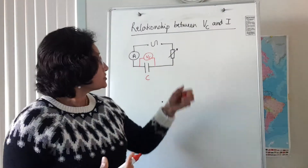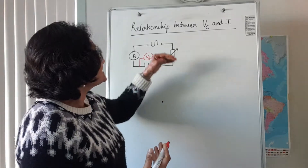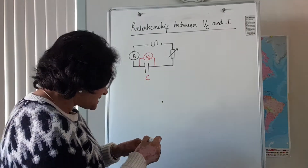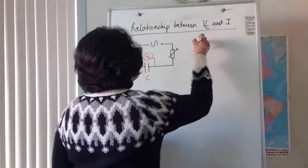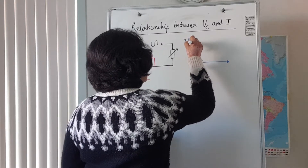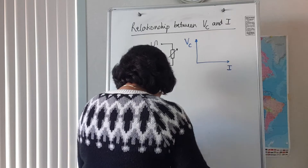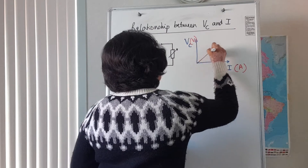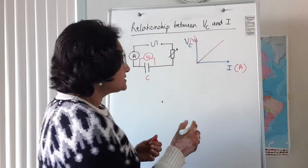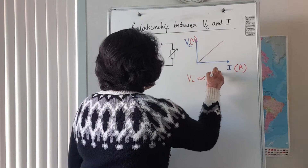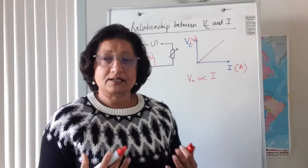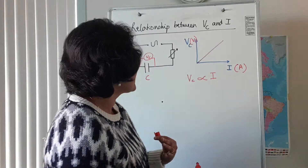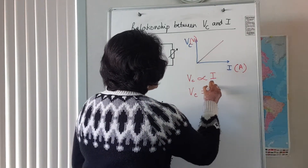For different currents — by changing the sliding contact of the rheostat — you can get different voltages across the capacitor plates. If you plot them on a graph of voltage across the capacitor plates against circuit current, you end up with a straight-line graph, which tells you that the voltage across the capacitor plates is directly proportional to the circuit current.